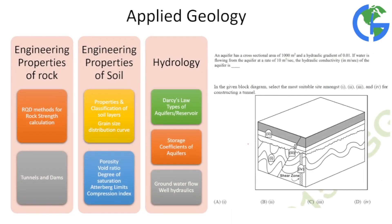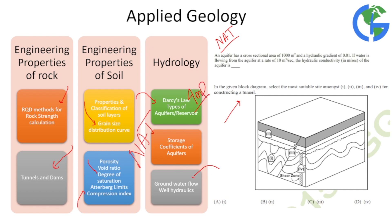Applied geology is majorly NAT type questions. Exceptions are theoretical questions directly from tunnels and dams topics. The main NAT questions are based on RQD methods, grain size distribution, porosity, void ratio, degree of saturation, and Atterberg limits — all NAT equations. Darcy's law for groundwater flow is very, very important and you will see a question from it every year. Applied geology, as the name suggests, is mostly calculation-based.